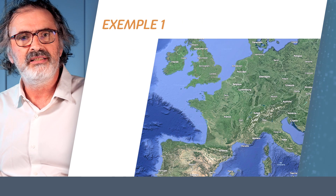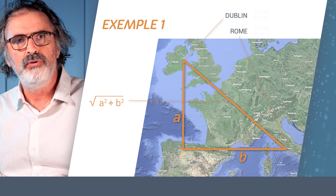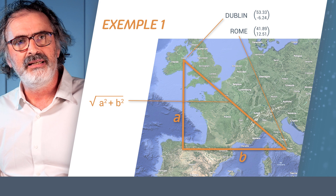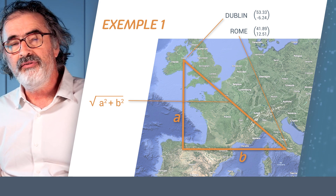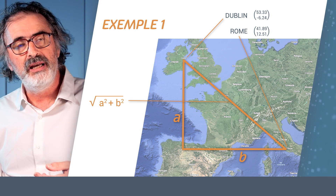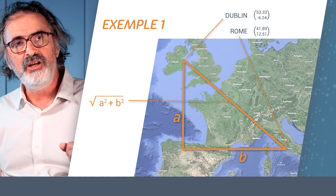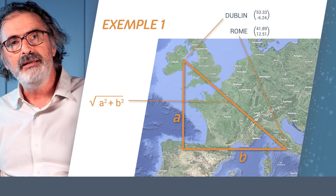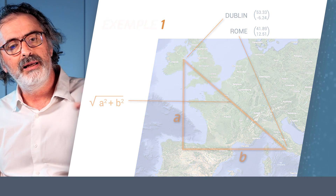One of the best known distances is called the Euclidean distance — you have all learned this at school. On this slide you can see the simple mathematics that go with it. If I've got for the city of Dublin and the city of Rome two coordinates, I can apply a typical equation, and using this equation I can then transform the coordinates into kilometers or into miles.